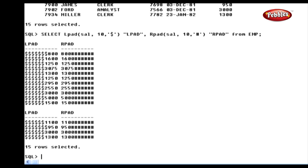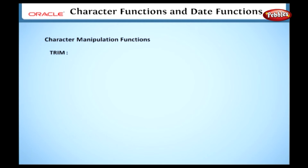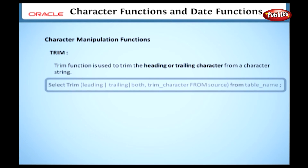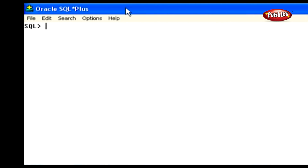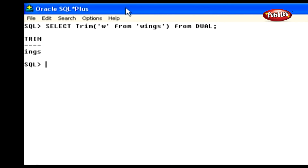Here we will see the remaining character manipulation functions. Let's resume with LPAD and RPAD. These two functions are used to pad a character on the left and right side of a string. In LPAD, the string is padded to length n with a specified character on the left. RPAD is similar but pads on the right side. If the padding character is left out, a space is used as default. A sample statement displays salary with 10 digits, justified left and right, with remaining digits filled with dollar and pound characters.